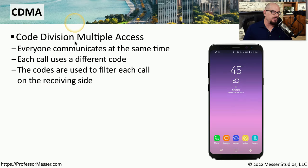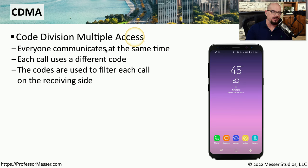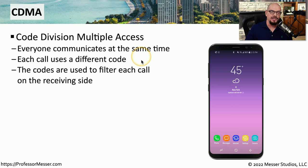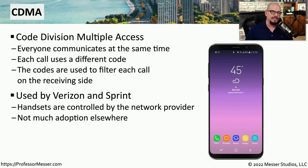CDMA is the Code Division Multiple Access. As the name implies, you could have multiple people communicating over this network, but as they were sending information, they were sending it with a particular code. Each call used a different code to be able to communicate, which meant that the handset could filter out codes that weren't important to your conversation and focus only on the code specific between you and who you're talking to. In the United States, CDMA was commonly used by Verizon and Sprint.